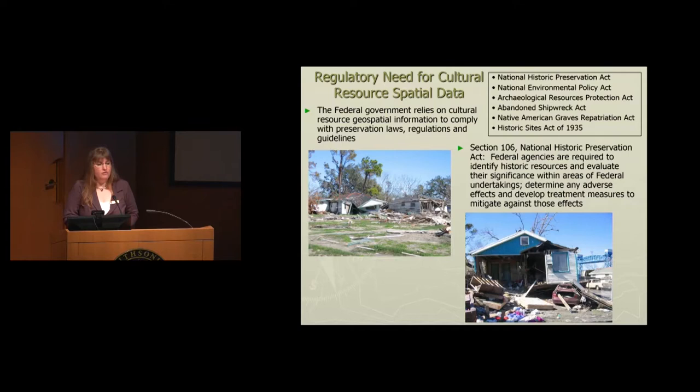Here in the United States, we have a regulatory need to have cultural resource spatial data. From the various laws we have, the highest priority from my perspective is the National Historic Preservation Act, which defines that federal government agencies — when they respond to any sort of disaster — need to first look to see if there are historic resources that might be impacted, and what they would do to mitigate that impact. That's referred to as Section 106 of the National Historic Preservation Act.